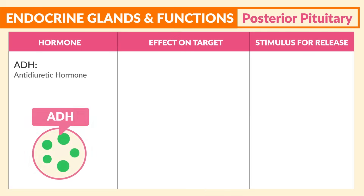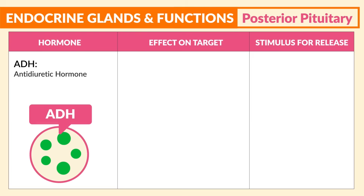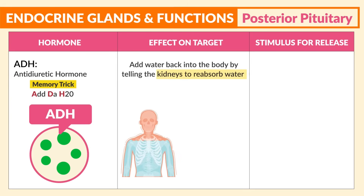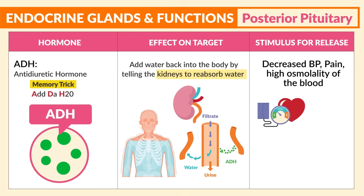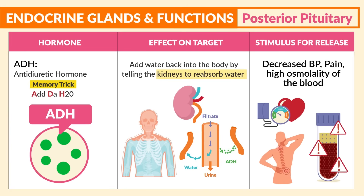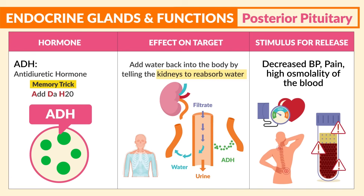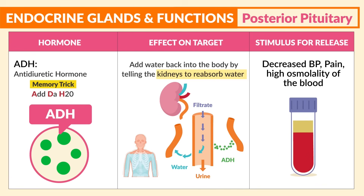Now for the hormones: ADH, the antidiuretic hormone. For the memory trick, we use ADH — adds the H2O — because the effect on the target is it adds water back into the body by telling the kidneys to reabsorb water. Its stimulus for release is decreasing blood pressure, pain, and even high osmolality inside the blood — basically, really thick blood — so we need to add more water back to the body to dilute that thick blood.